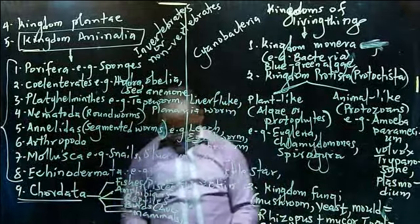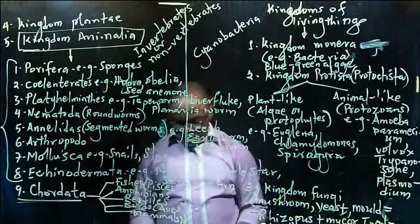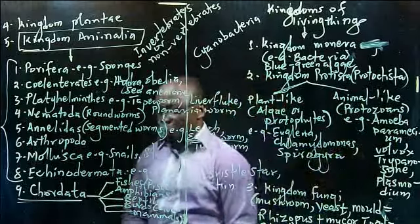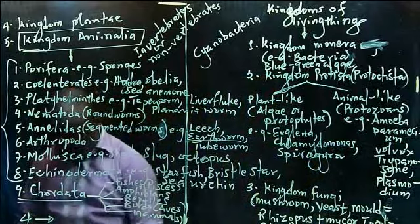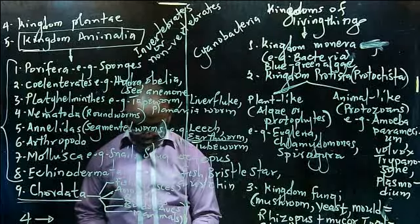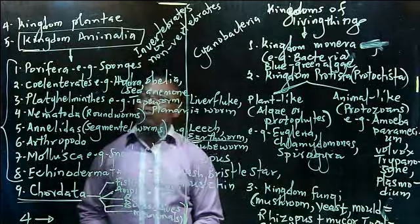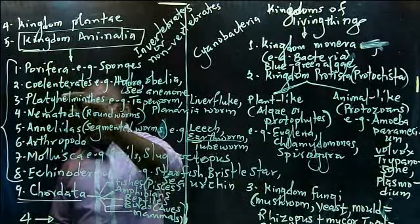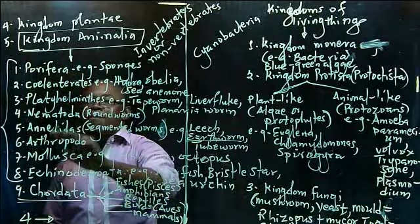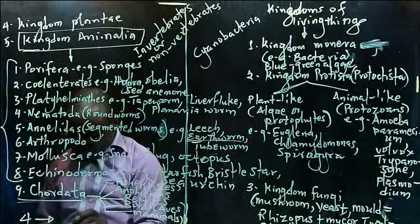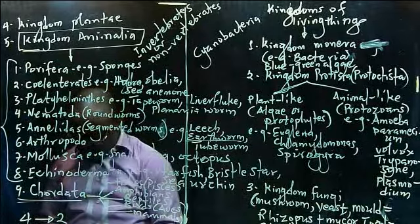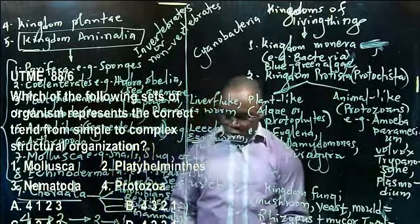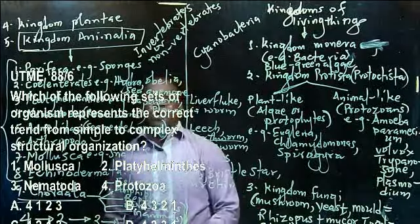So we can now answer the question. The question asks for evolutionary order. Mollusca cannot be the simplest. The simplest here is Protozoa, which belongs to Kingdom Protista — so Protozoa must come first, that's number four. After Protozoa, we check the remaining animals: Platyhelminthes, Nematoda, and Mollusca. Platyhelminthes follows next as number two, then Nematoda as number three, and lastly Mollusca as number one. That gives us the evolutionary order four, two, three, one — option D. Thank you very much for viewing.